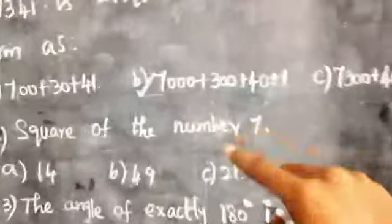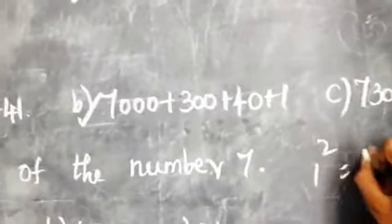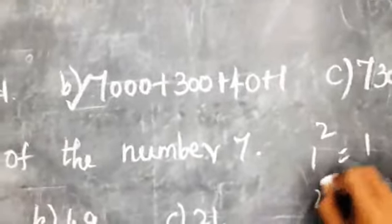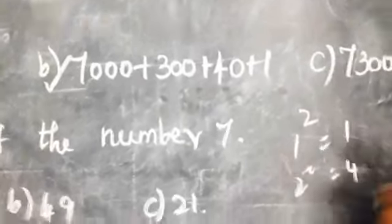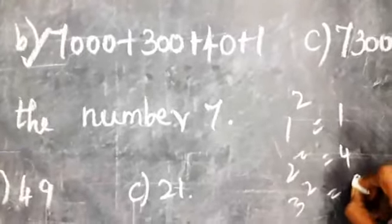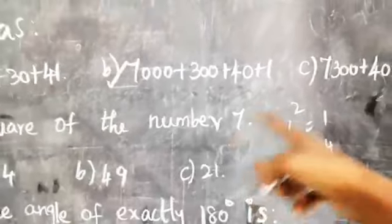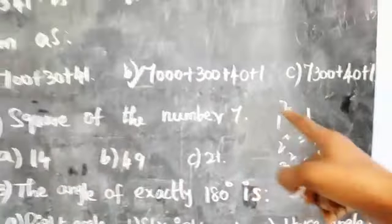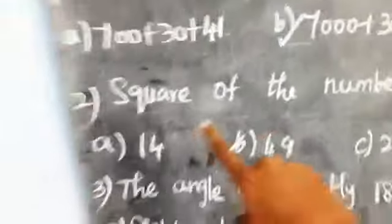Square of a number seven: one squared means one, two squared means two twos are four, three squared means three threes are nine. So seven squared means seven sevens are forty-nine. Therefore forty-nine is the square of number seven.